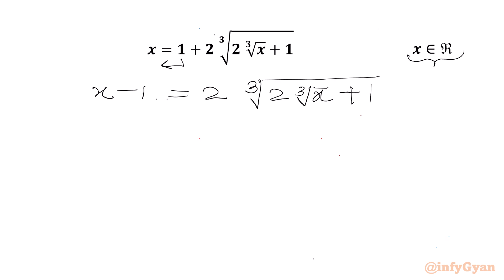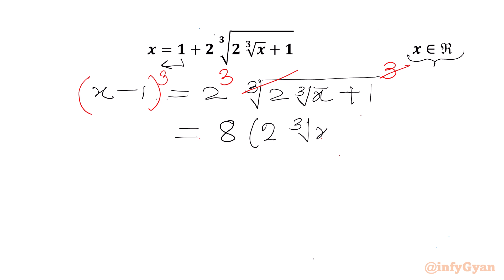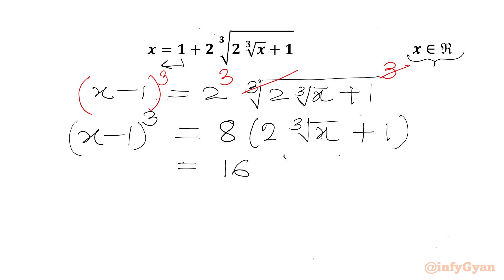Now we will consider cubing both sides. So I will write power 3 on both sides. The cube root and cube cancel from the RHS. We know that 2 cubed is 8, so we will write 8 times 2, which is 16, times cube root of x plus 1, plus 8. The LHS is x minus 1 whole cube.